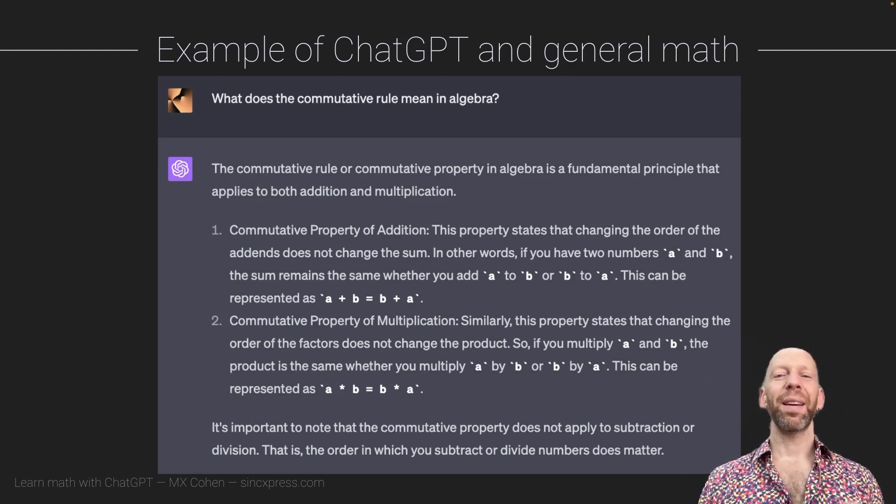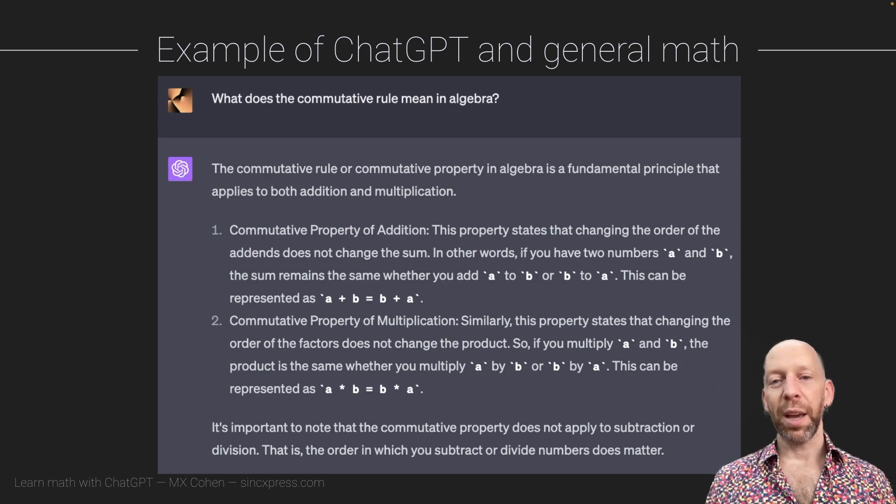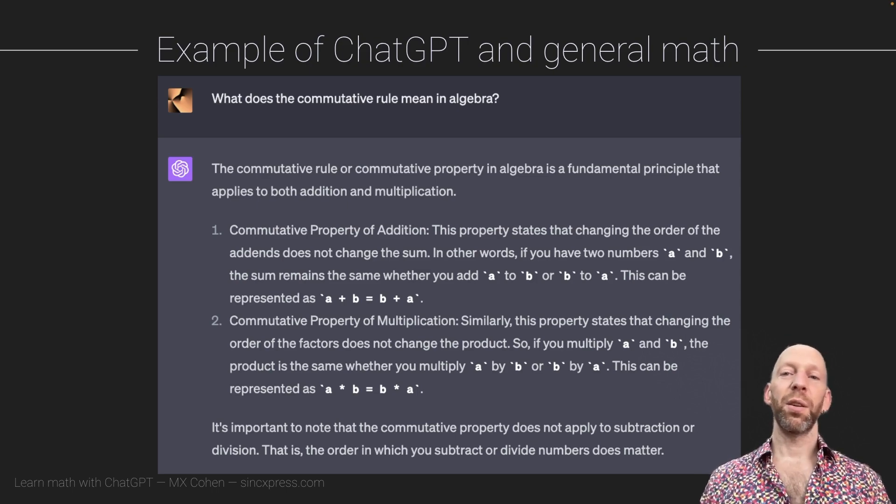ChatGPT gave me back an excellent answer that explains the commutative property in addition and multiplication, and then it even tells us that the commutative property does not hold for subtraction or division. This answer is perfect. It's amazing. It's clearly written. It's easy to understand. If you want to know what the commutative property is and you go to ChatGPT, you can't go wrong here. This is an excellent explanation.